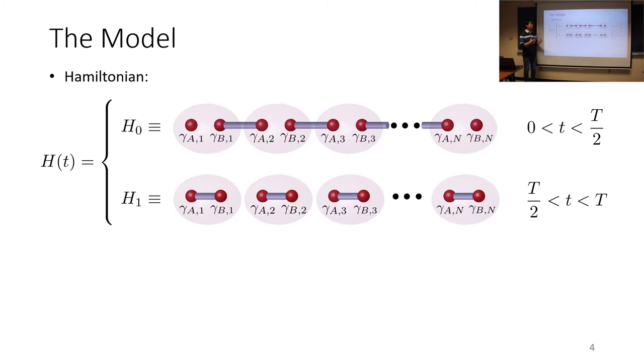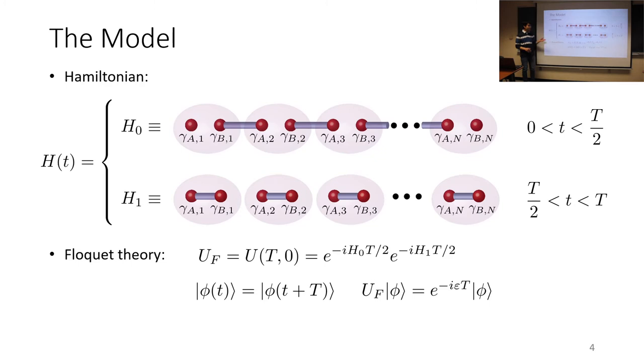Another way to frame this is to say that the Hamiltonian alternates in time between the topological phase and the non-topological phase of the Kitaev chain. Now since we're talking about Floquet, it's important to introduce some of the machinery that goes into it.